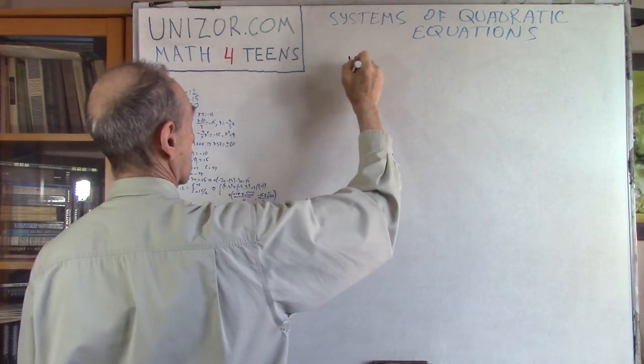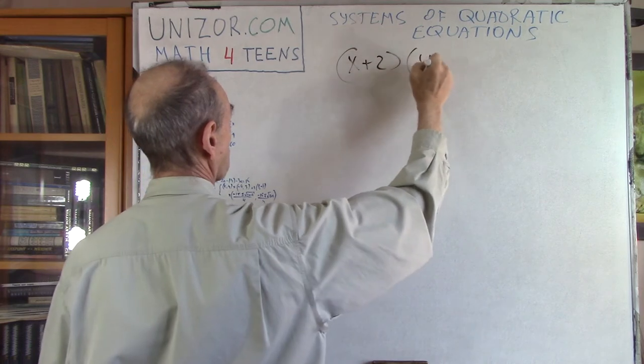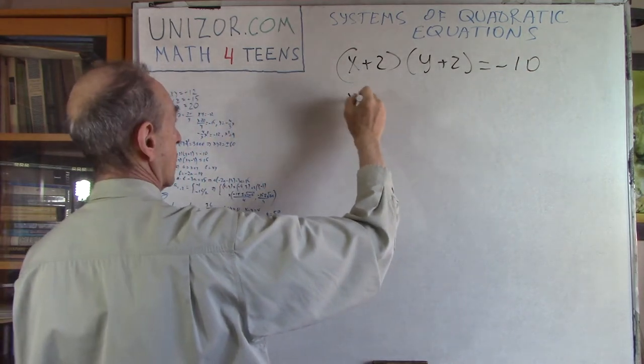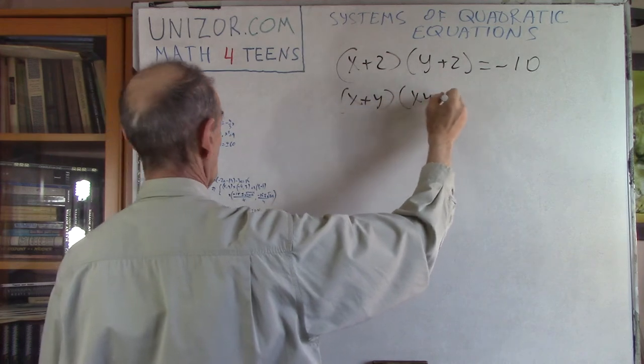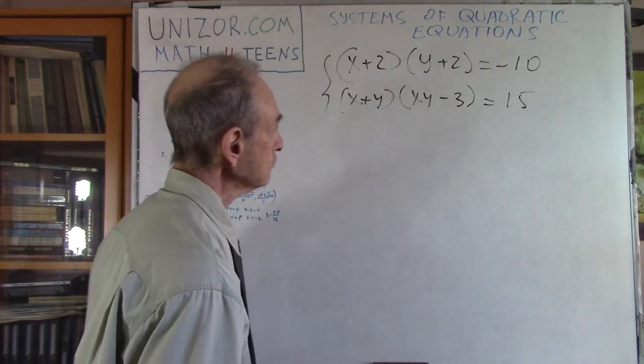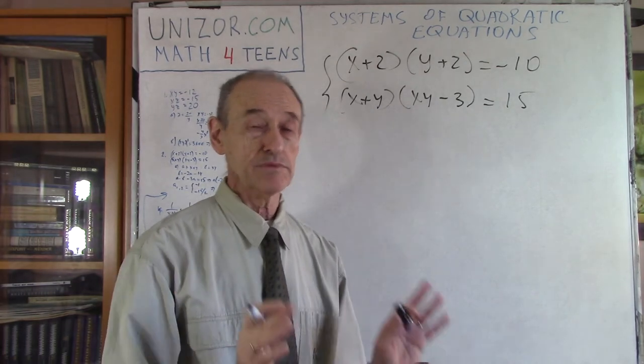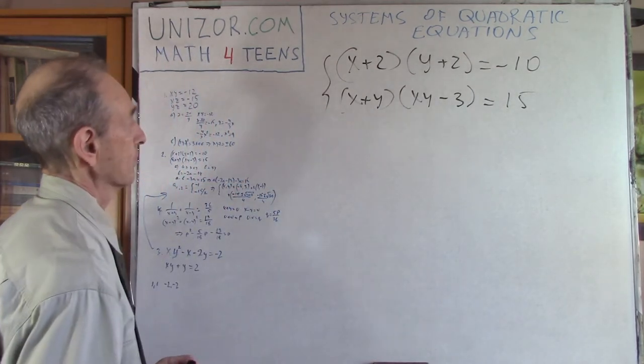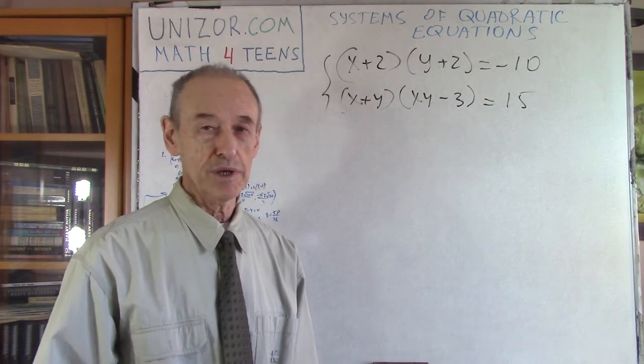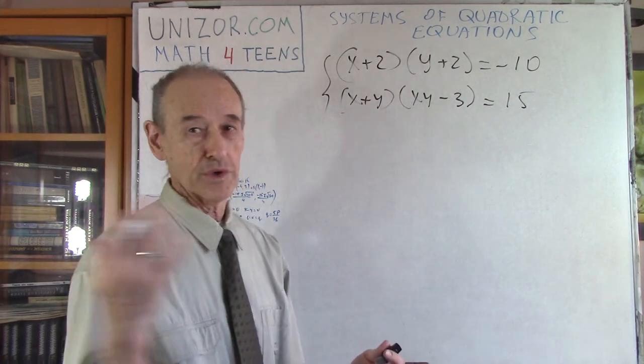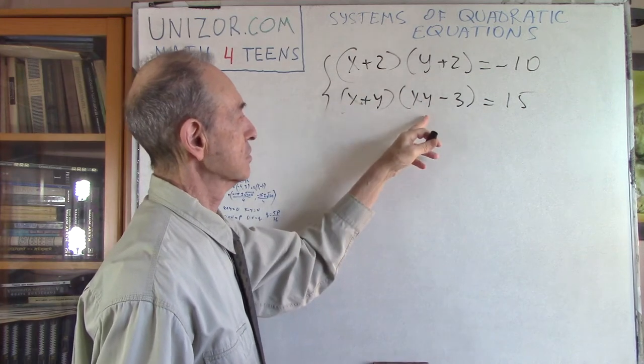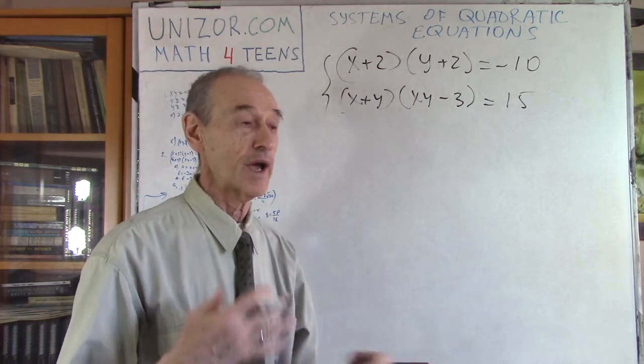Now, next problem. X plus 2 times Y plus 2 equals minus 10, and XY plus X times Y minus 3 is equal to 15. Well, that's complicated, at least from the first look at it. However, since I don't know how to solve this equation, there is no kind of general approach. There is no such thing as going straight forward.